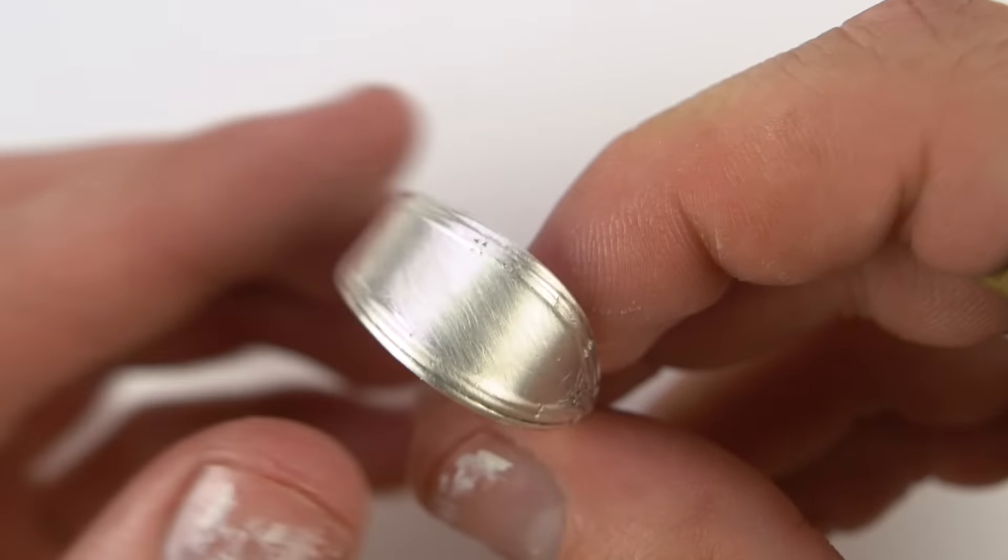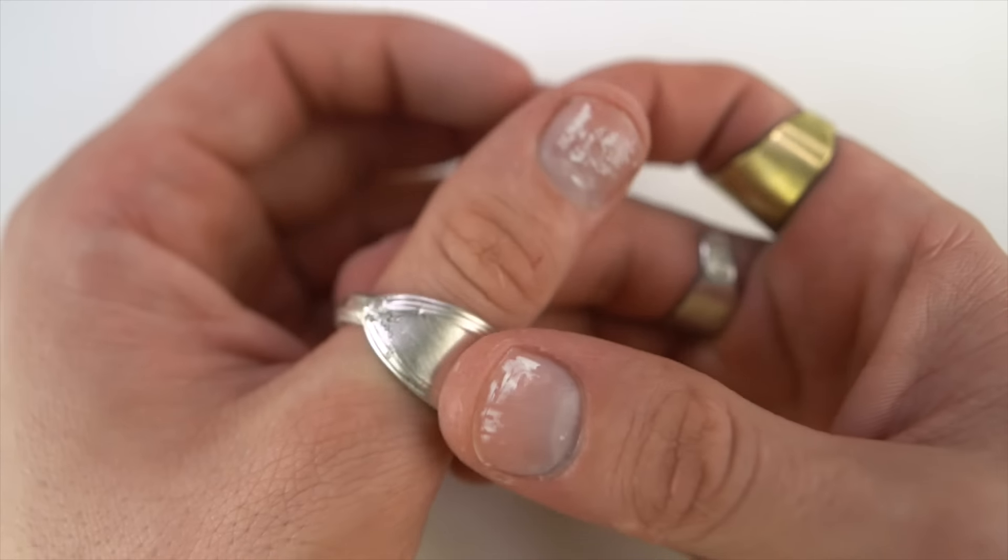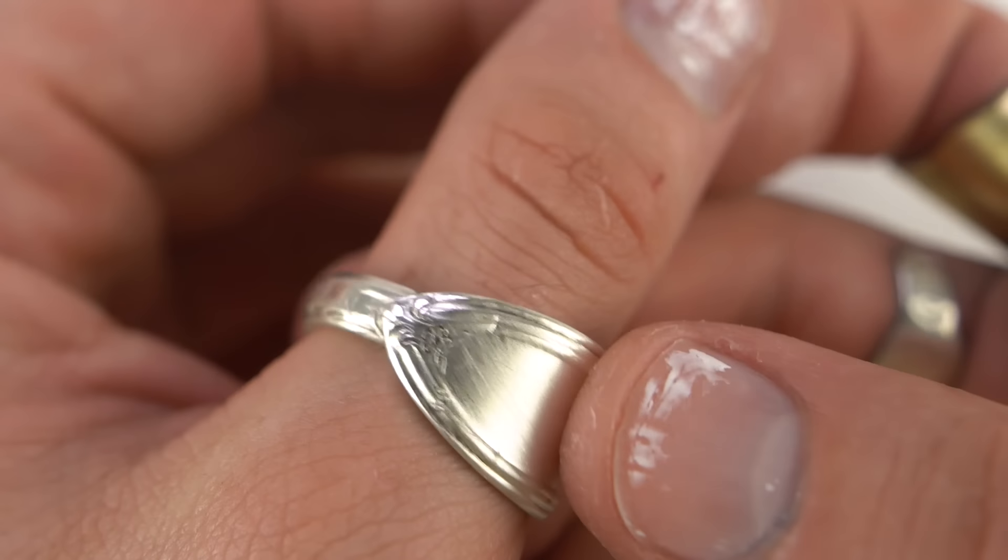So we got the toothpaste off and the red fuzz off and it looked pretty good. I mean you could still see a little bit of the scratches from the green scrubby thing, so if I were to do it again I think I would just use the toothpaste.